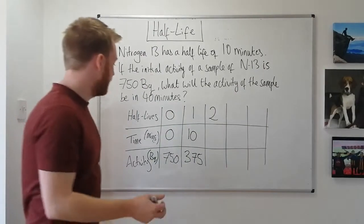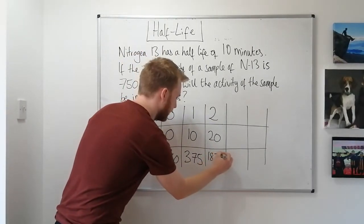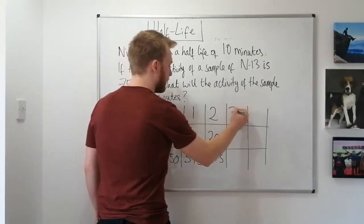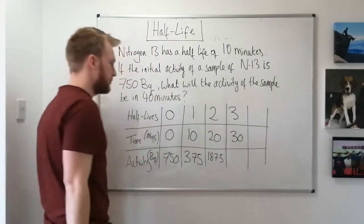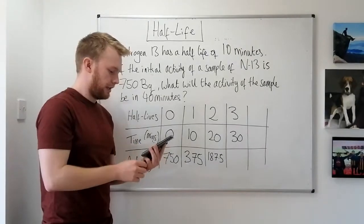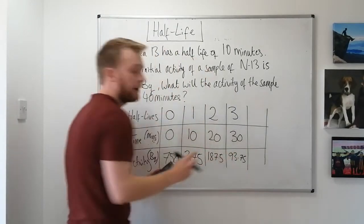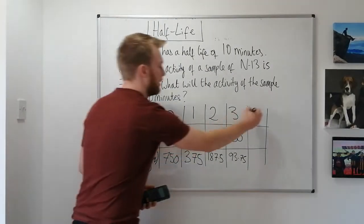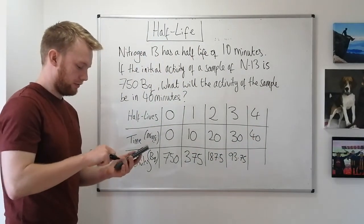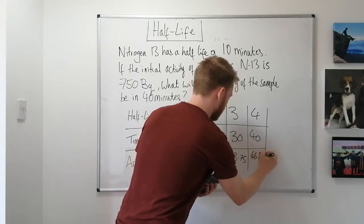After two half-lives, 20 minutes have passed and the activity is 187.5 Becquerels. Remember, you can use your calculator in the physics exam. After three half-lives, 30 minutes have passed and the activity is 93.75 Becquerels. After four half-lives, 40 minutes have passed, and halving again gives 46.875 Becquerels.